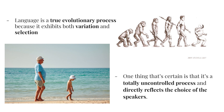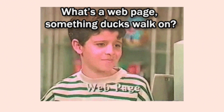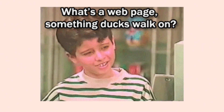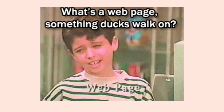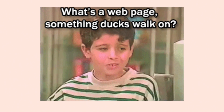Language is a true evolutionary process because it exhibits both variation and selection. Some languages change a lot while others remain almost identical to their original form, but one thing that's certain is that it's a completely uncontrolled process and directly reflects the choices of the speakers — and the choice of the speakers is something I'm going to come back to quite a lot. One example of linguistic change is the acquisition and adoption of new words into our vocabulary.